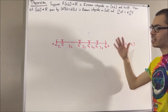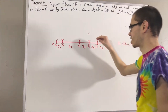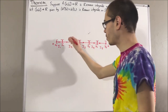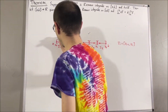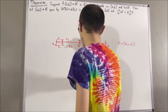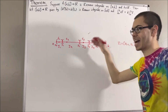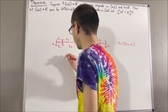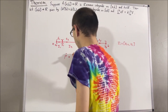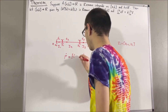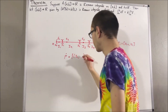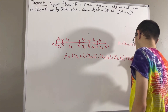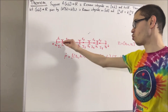A tagged partition is when we select a point from each of these sub-intervals. The points that we select are what we call tags, and we might label the tags t₁, t₂, and so on. So this would be a tagged partition of [a, b]. We can symbolize a tagged partition by a letter with a dot on top, and in the collection we have a collection of ordered pairs — the first coordinate being the sub-interval, and the second coordinate being the tag of the sub-interval.